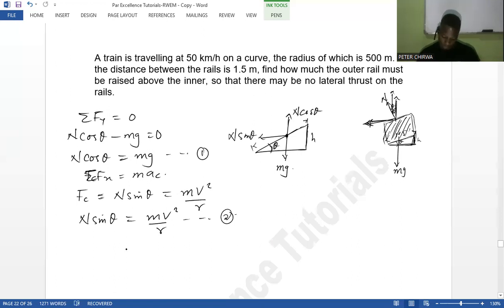So the goal here is to find the angle. We divide these two equations. Equation two divided by equation one, we're going to have N sin theta over N cos theta being equal to mv squared over r divided by mg. So what are we going to have? We're going to have tan theta being equal to v squared over rg.